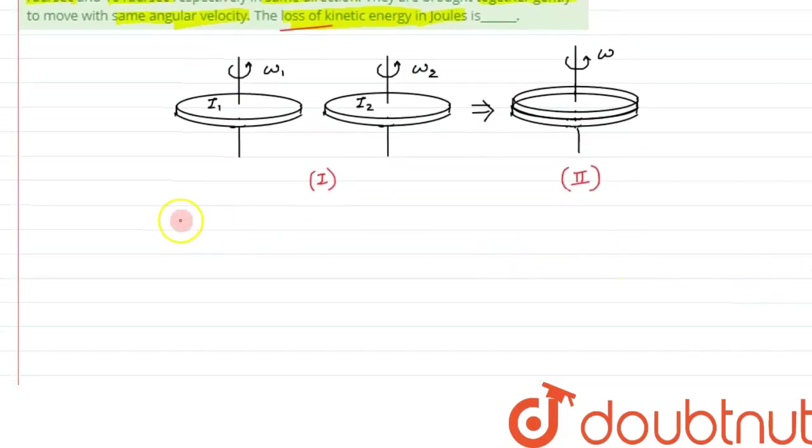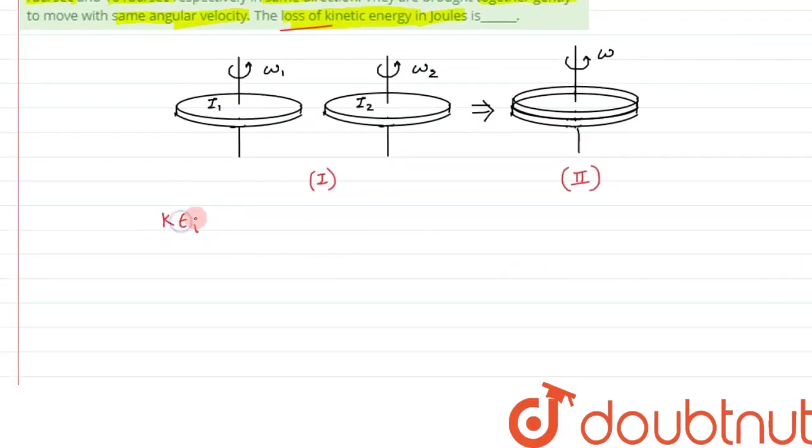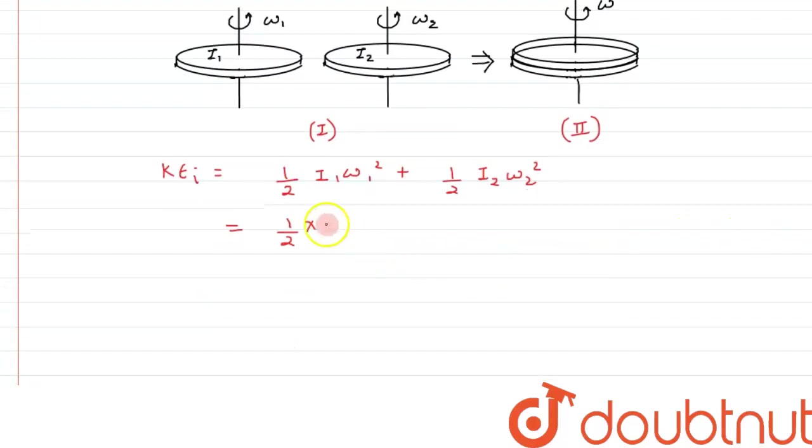First let's calculate the initial kinetic energy. Initial kinetic energy will be kinetic energy due to the first disk plus kinetic energy due to the second disk. For first disk we write ½ I₁ω₁² plus ½ I₂ω₂². We will substitute the values. Half into I₁ has been given as 9 and it has been rotating with angular velocity of 6 radian per second.